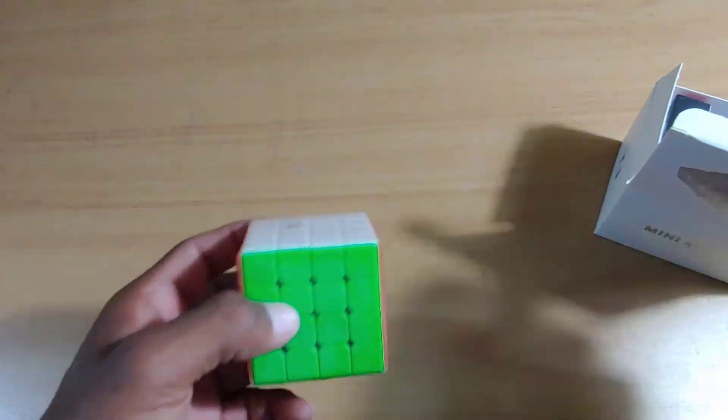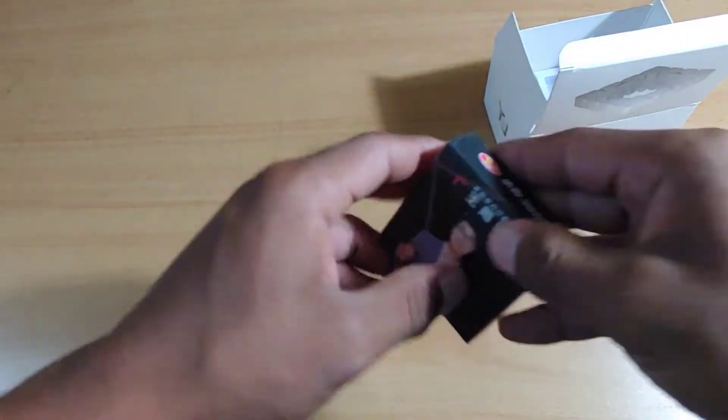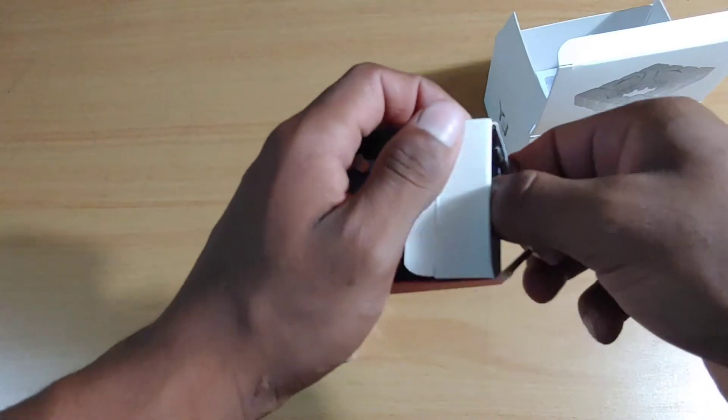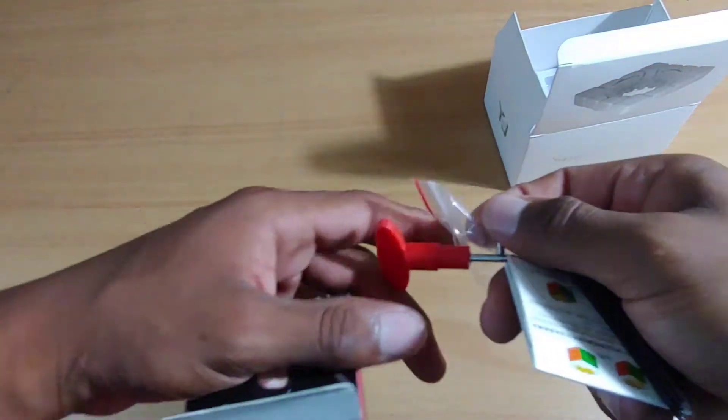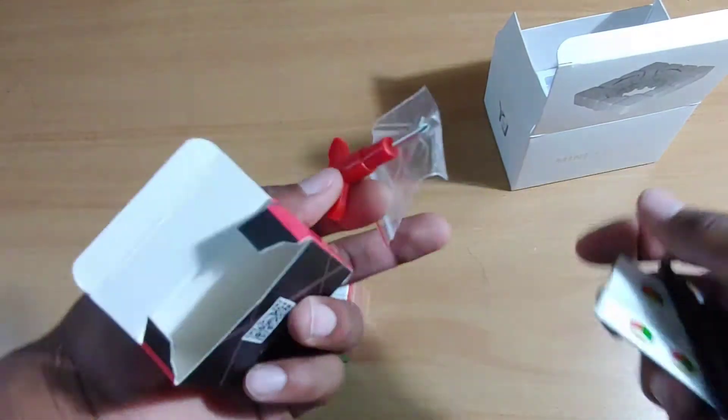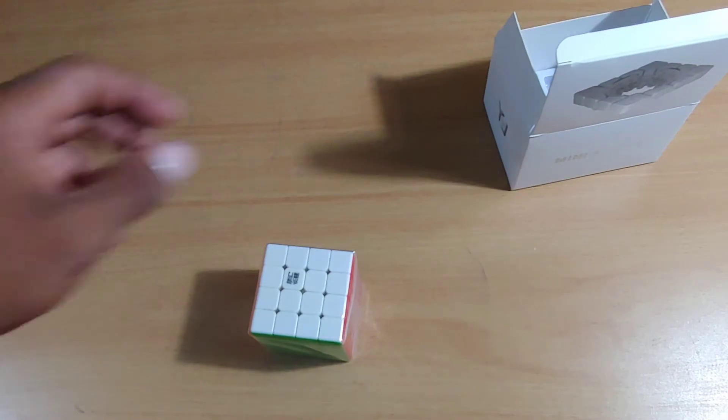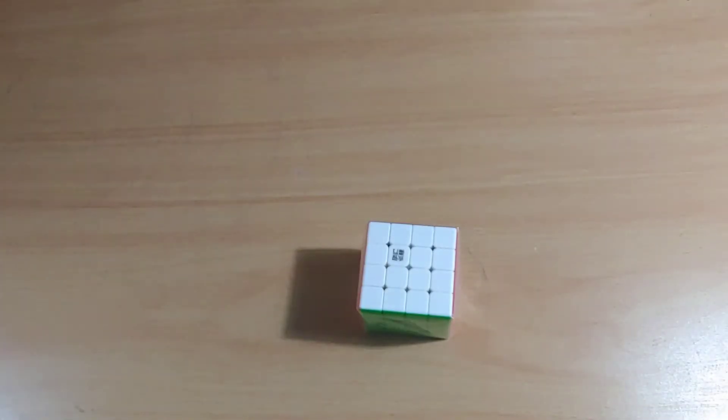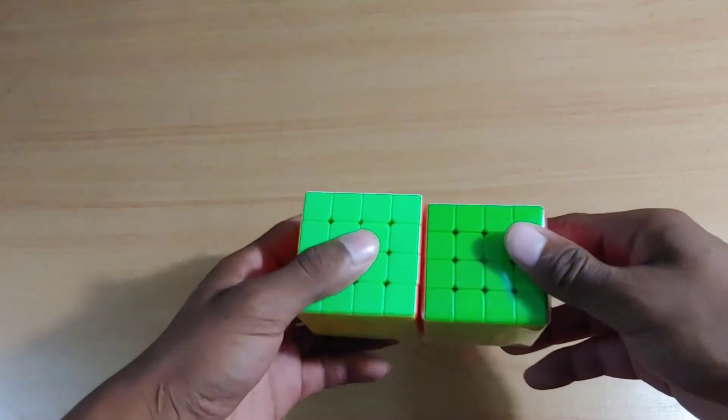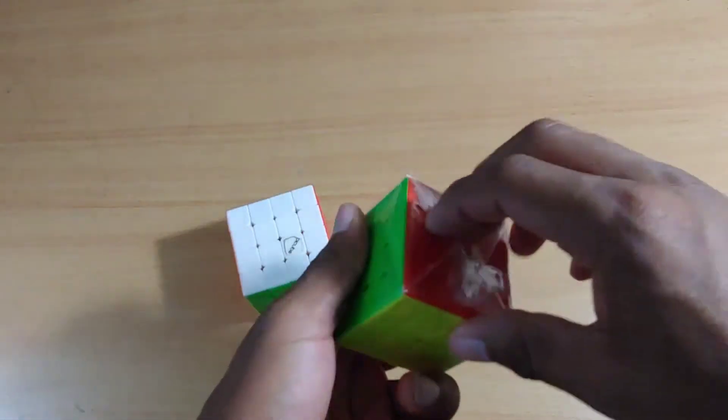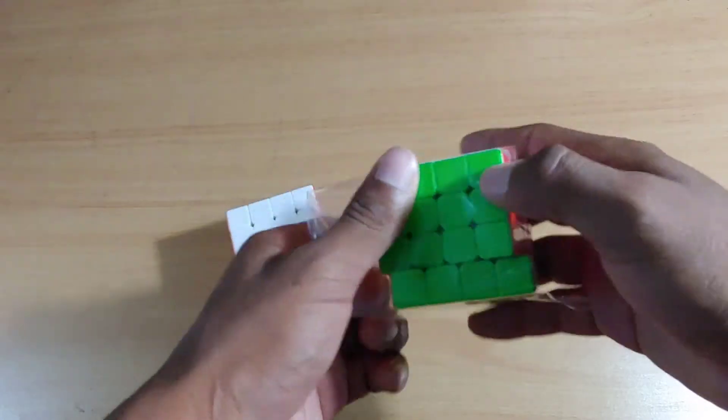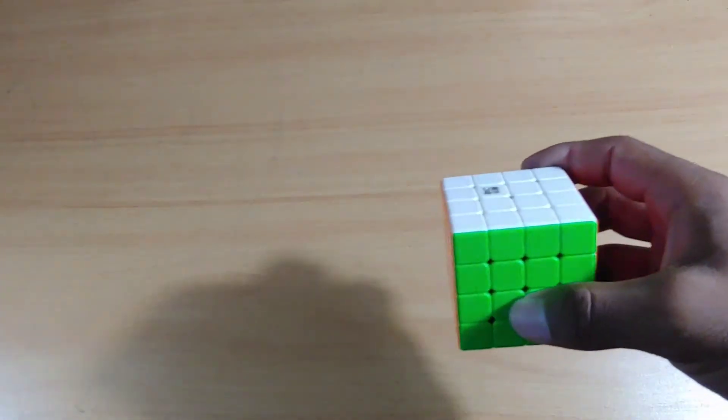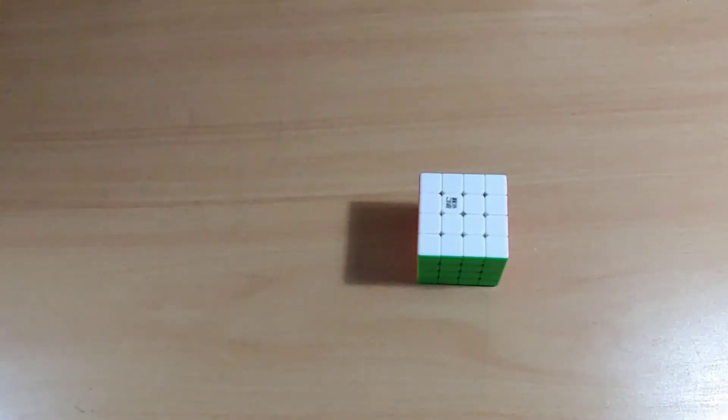I wanted to get some new 4x4s because I'm going to be going to an upcoming comp next month, and it's going to have 4x4. Just the regular YJ stuff. Oh my god, this is tiny. For reference, I'm pretty sure the main one is 59mm, and this is 56mm. Super tiny.